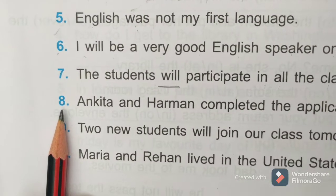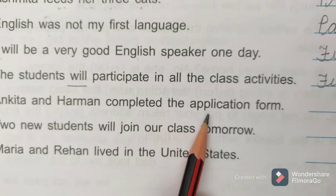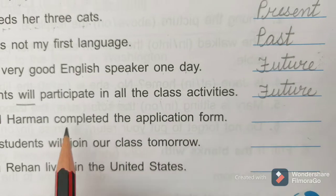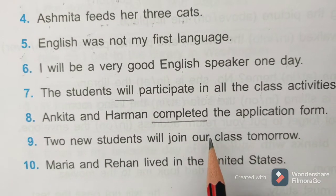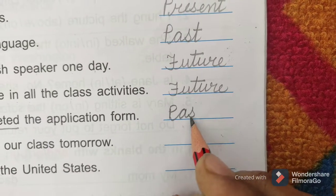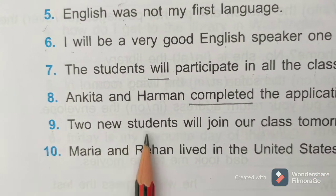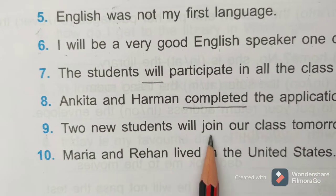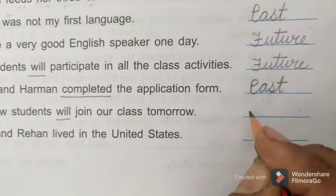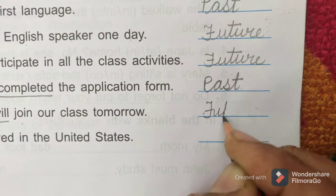Question 8: Ankita and Herman completed the application form. Completed is past tense, so write here: past. Question 9: Two new students will join our class tomorrow. Will is future tense, so write here: future.